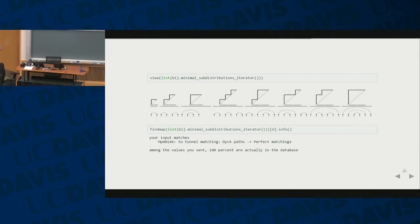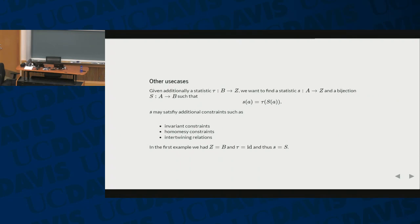So we're actually quite happy with that. But there's actually more that you can do. Because our original problem that we wanted to solve is we wanted to find a statistic on permutations that's invariant under rotation, but has the same distribution as the length of the longest increasing subsequence. So you can have an additional statistic tau on B, like length of longest increasing subsequence. And together with our bijection S, we want to find the statistic lowercase s, so that s is the statistic value after you apply the bijection and then tau.